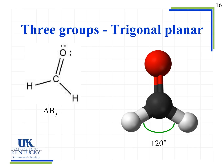When we get to three groups, notice we have two single bonds and one double bond. That doesn't matter — we're just counting the total number of groups. So one double bond counts as one group, plus two single bonds gives us three groups total. We use A for the central atom — in this case carbon — and B3 for three bonding groups. Any time we have AB3, our geometry is trigonal planar, with bond angles of 120 degrees.